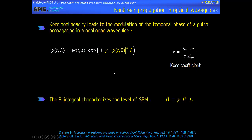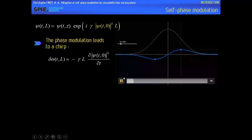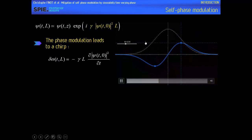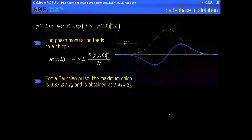One convenient way to quantify self-phase modulation is to use the B integral, which is simply the product of γ (gamma) by the input peak power and by the propagation length. If you change the phase of your pulse, then you will also change the instantaneous frequency of your pulse. This instantaneous frequency is also called the chirp and is the temporal derivative of the phase. When you change the B integral, the maximum of the chirp will increase with B, but it will not change its position, and this position and parameters can be quite easily calculated analytically.